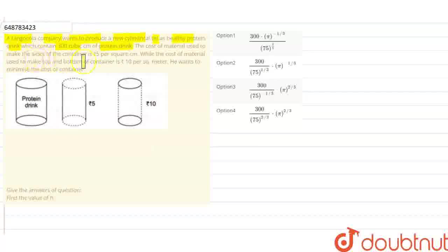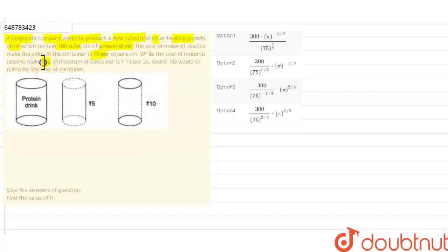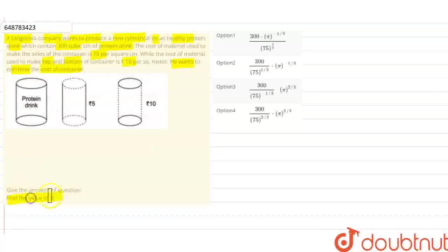The cost of materials used to make the sides of the container is Rs. 5, while the cost of the material for the top and bottom is Rs. 10. He wants to minimize the cost of the container. We need to find the value of h, and there are 4 options given.